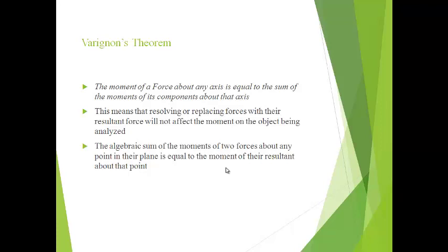We have to prove Varignon's theorem. There are two cases. Case 1: let the forces be parallel. Let us assume forces P and Q acting at collinear points A and B respectively. Consider a point O on AB, where O may be either inside AB or outside AB. In both cases, the algebraic sum of the moments of P and Q about O equals the moment of their resultant about O. Case 2: let the forces meet at a point. We complete the proof using the parallelogram law. Assuming point O either inside or outside a line parallel to the line of action of the first force, in both cases the algebraic sum of moments of those forces about O is the moment of their resultant. This is the statement of Varignon's theorem.